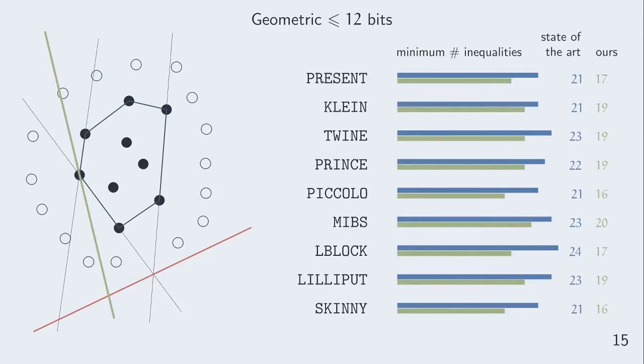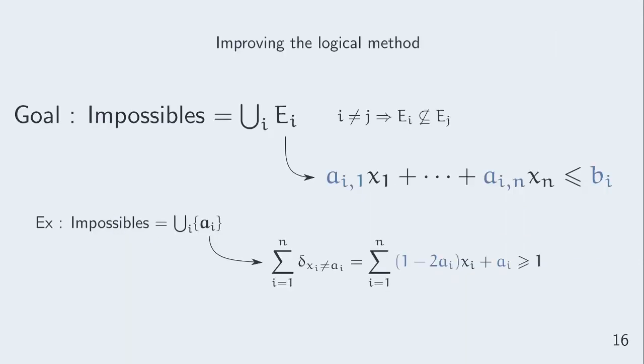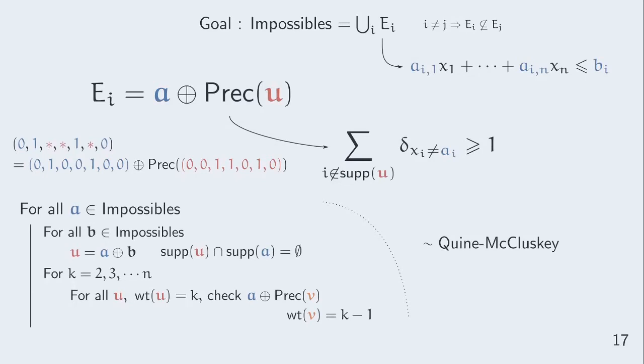So we now focus on improving the logical method. The goal here is to pack the impossible points in sets we know how to discard with a single inequality. We have just seen an example with singletons.